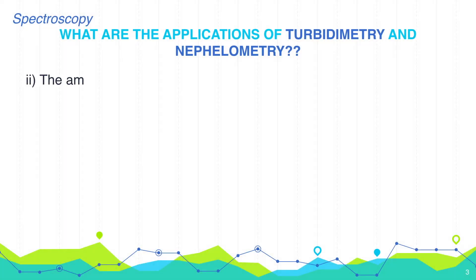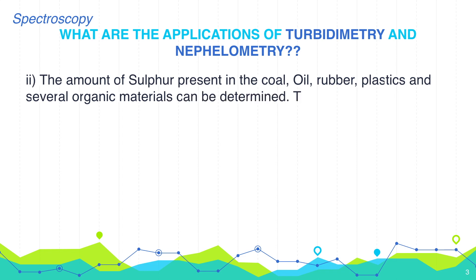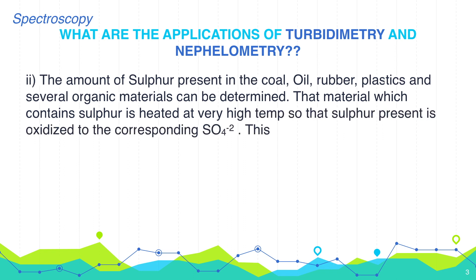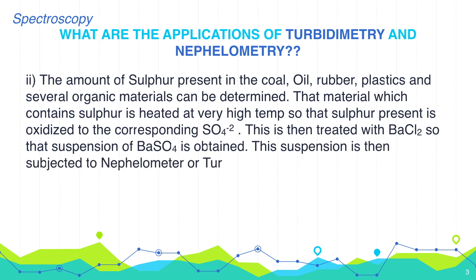The amount of sulfur present in coal, oil, rubber, plastic, and several organic materials can be determined. The material which contains sulfur is heated at very high temperature so that sulfur present is oxidized to the corresponding sulfate. This is then treated with barium chloride so that a suspension of barium sulfate is obtained. This suspension is then subjected to nephelometry or turbidimetry.